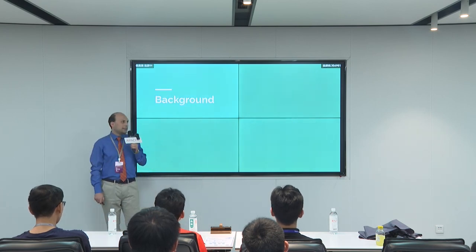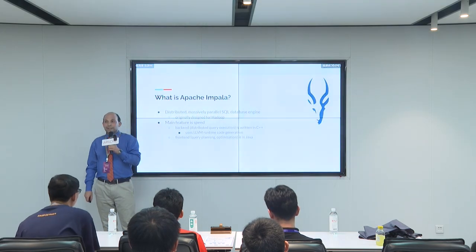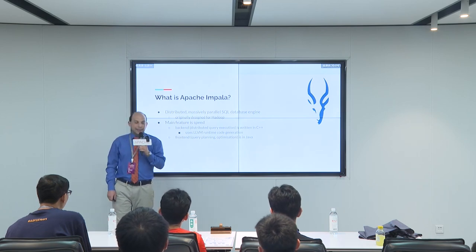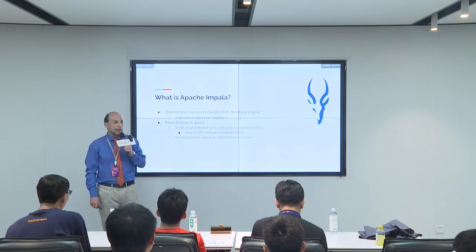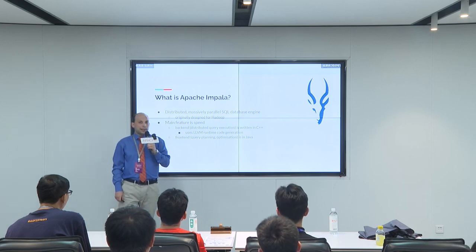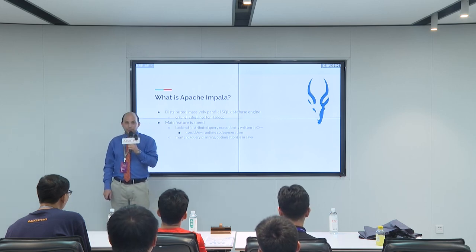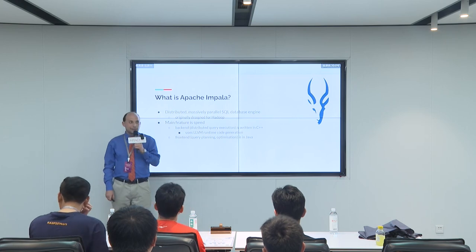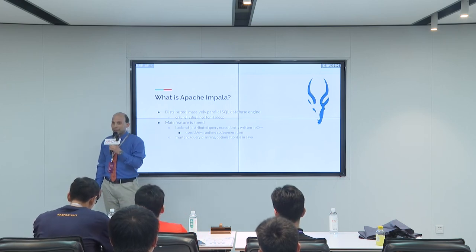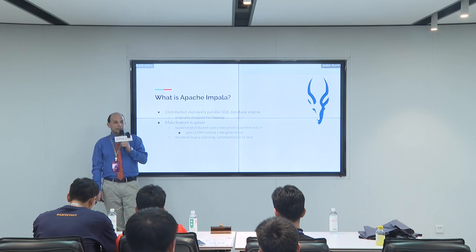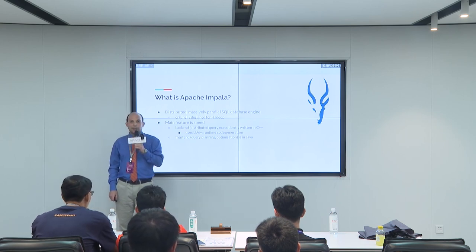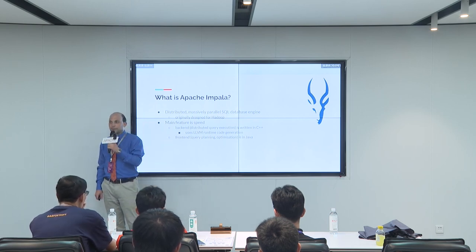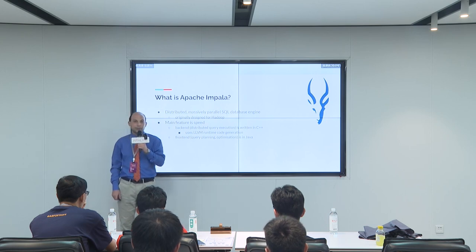Some background. What is Apache Impala? It is a database engine that is massively parallel and used in big data, and it was originally designed for the Hadoop ecosystem. Its main feature has always been speed, so we always want to run queries as fast as we can. Impala consists of two parts. The first one, which we call the backend, is written in C++, and it is responsible for distributed query execution.